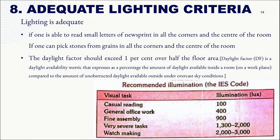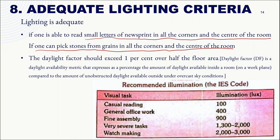Lighting is adequate if inmates can read small letters of newsprint in all corners and in the center of the room. For illiterate persons, check whether they can pick stones from grains in all corners and the center. The daylight factor should exceed 1% over half the floor area. For casual reading, 100 lux is needed; for general office work, 400 lux; for fine assembly, 900 lux; and for very severe tasks, over 1,000 lux up to 3,000 lux.